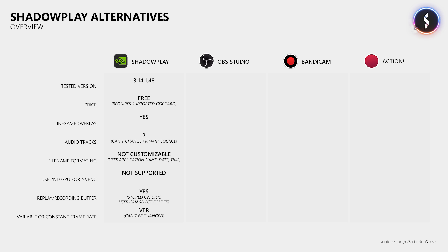Nvidia Shadowplay or Nvidia Share is free, but it requires that the graphics card supports that feature. It provides an in-game overlay so you always know if it is recording or if the instant replay feature is active. It can only record 2 audio tracks, and it is not possible to change the audio device for the primary audio track, which is a big downside if you want separate audio tracks for game audio, your microphone, and your VoIP software like Discord or TeamSpeak.